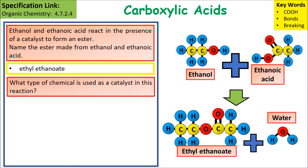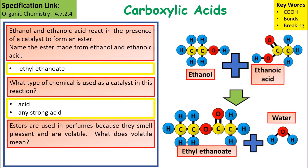As a catalyst in this reaction, any strong acid would be appropriate. Esters are used for perfumes because they smell pleasant and are volatile. Volatile means that a substance evaporates easily, or that it has a low boiling point.